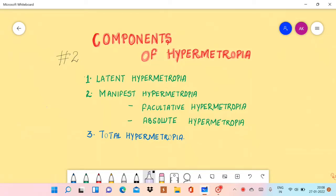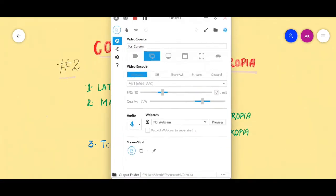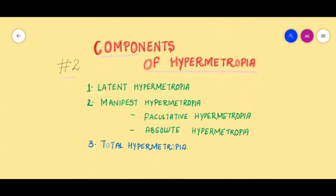Hello and welcome to the Insight Clinic Lectures. This is Dr. Amrit and I will be taking you towards the second part of hypermetropia, that is the components of hypermetropia. Hypermetropia has various components which we will be discussing one by one: latent hypermetropia, manifest hypermetropia, and total hypermetropia. Under manifest hypermetropia, I will explain facultative hypermetropia and absolute hypermetropia.